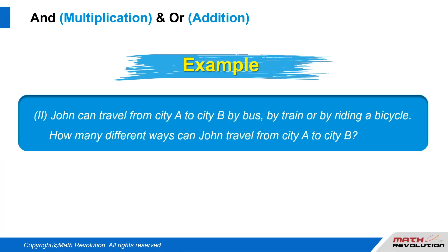John can travel from City A to City B by bus, by train, or by riding a bicycle. How many different ways can John travel from City A to City B?